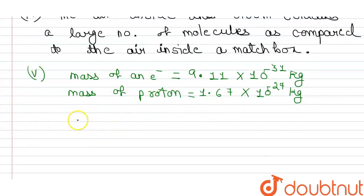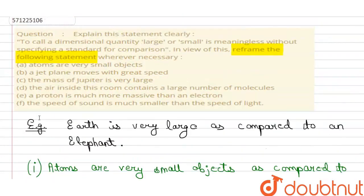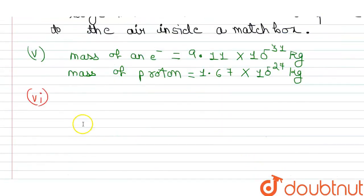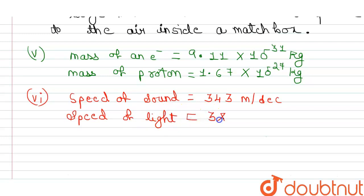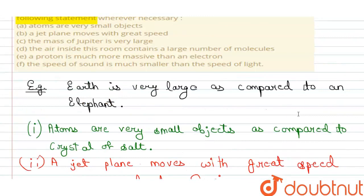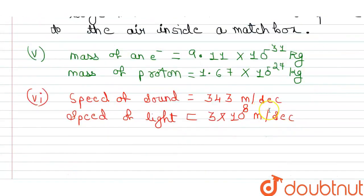Now let's move to the sixth statement. The sixth statement says: the speed of sound is much smaller than the speed of light. The speed of sound is 343 metres per second, and the speed of light is 3 × 10⁸ metres per second. So this statement is absolutely correct.